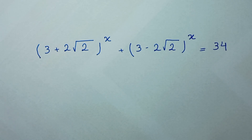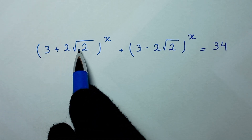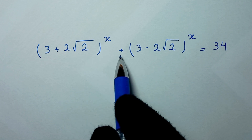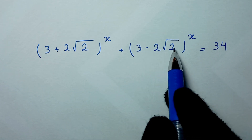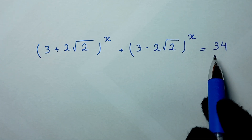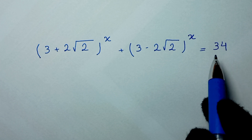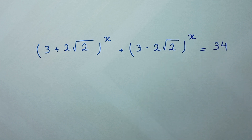Hello my friends, you're welcome to solve this math problem which is: (3 + 2√2)^x + (3 - 2√2)^x = 34. We need to find the values of x.